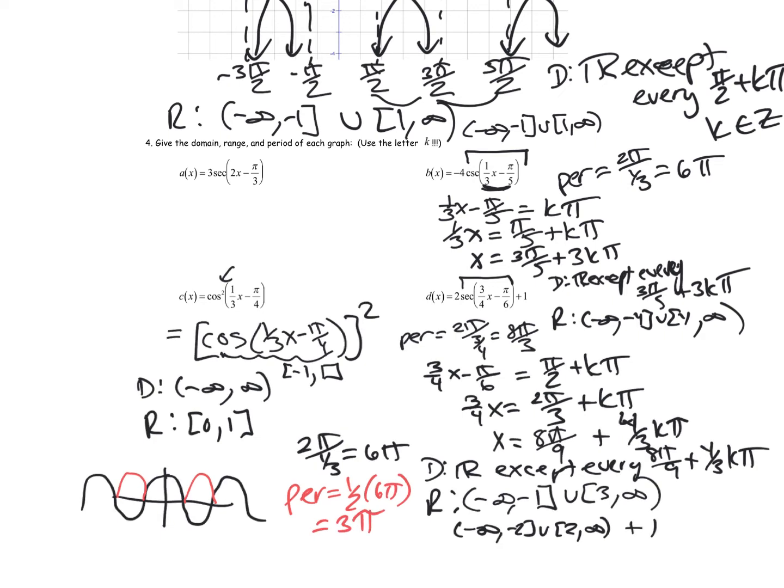That squared piece — squaring the ratios — impacts the range, and impacting the range also affects how often it repeats, the period. Now let's go through one graph and then do the name-that-graph problem. If you don't want to go through those, you can log off here, but I want to go through graphing.